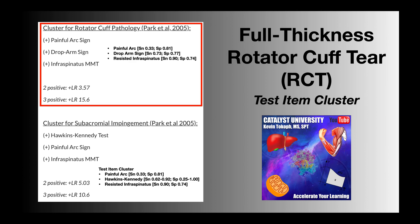A positive likelihood ratio of 5 is moderate evidence that the patient has the given pathology. So 3.57 is less than that by about one and a half — it's not great. If you have two of these positive, you can't definitively say that they have a full thickness rotator cuff tear. To be able to confidently say that, you really need all three of these tests to be positive.